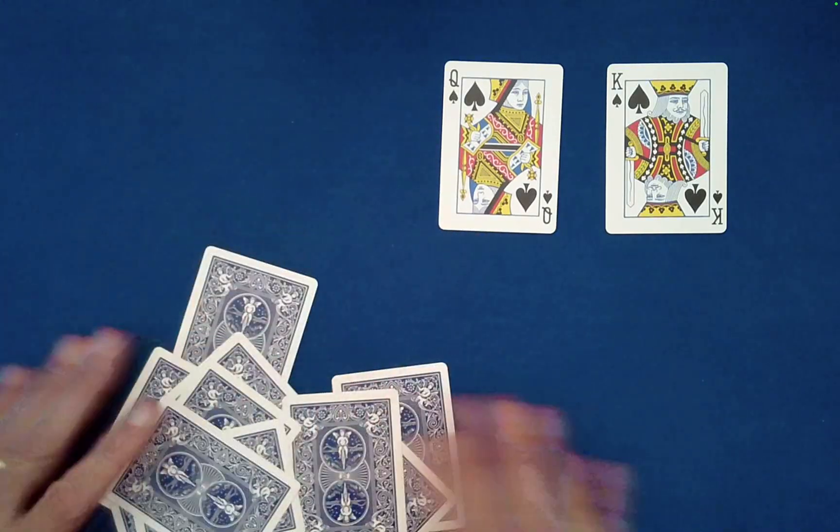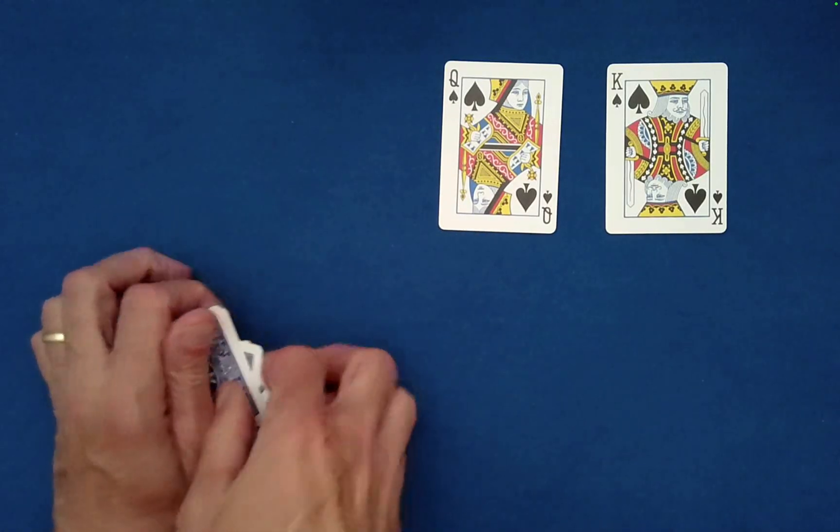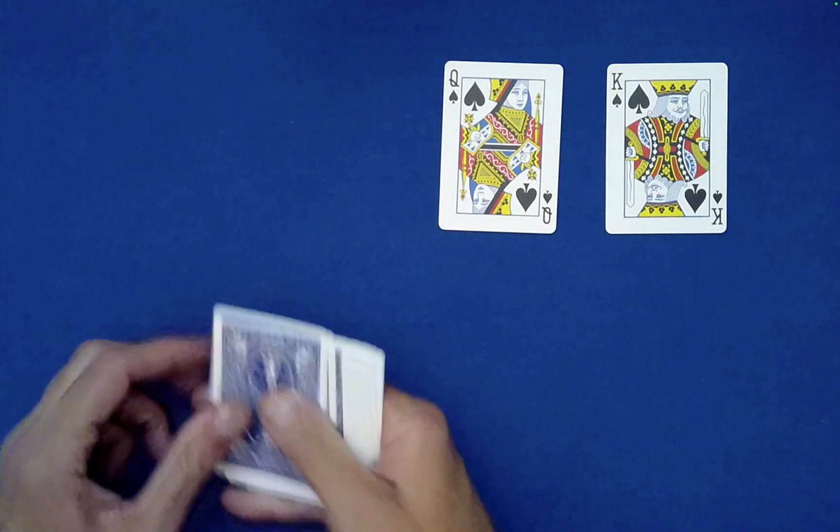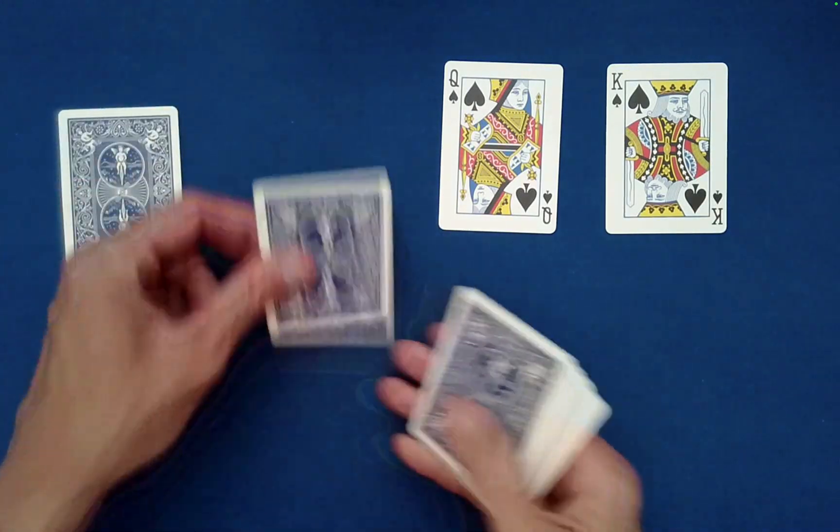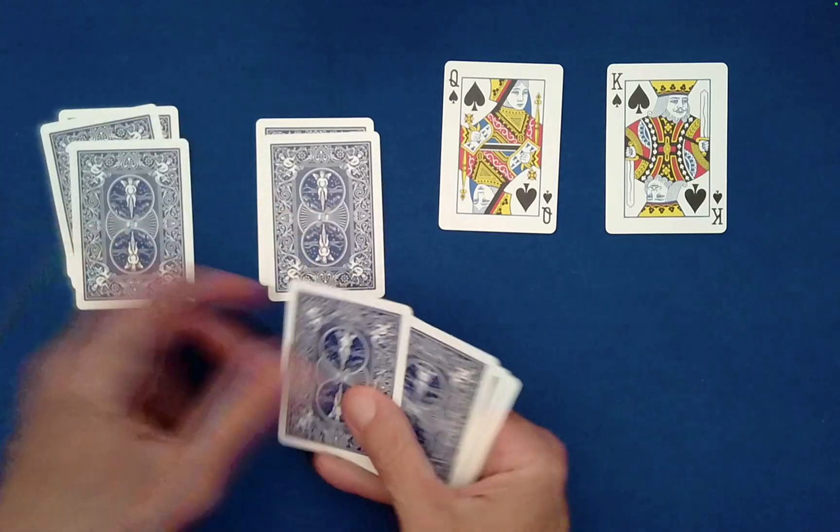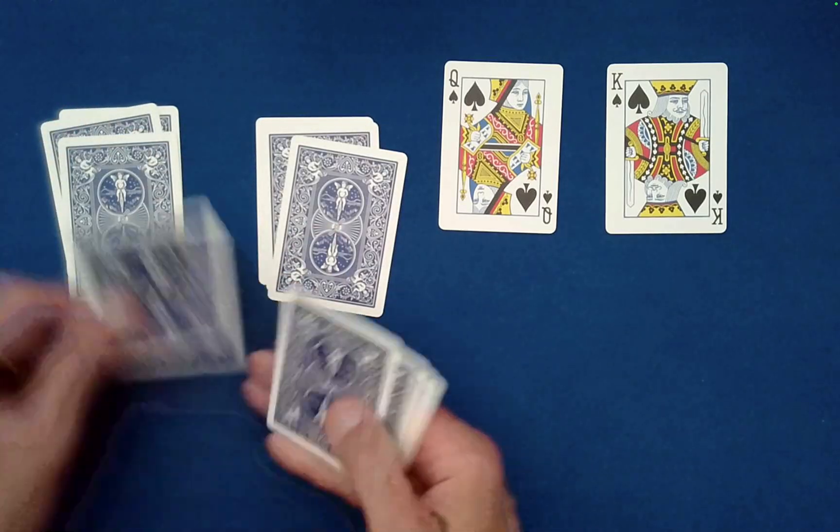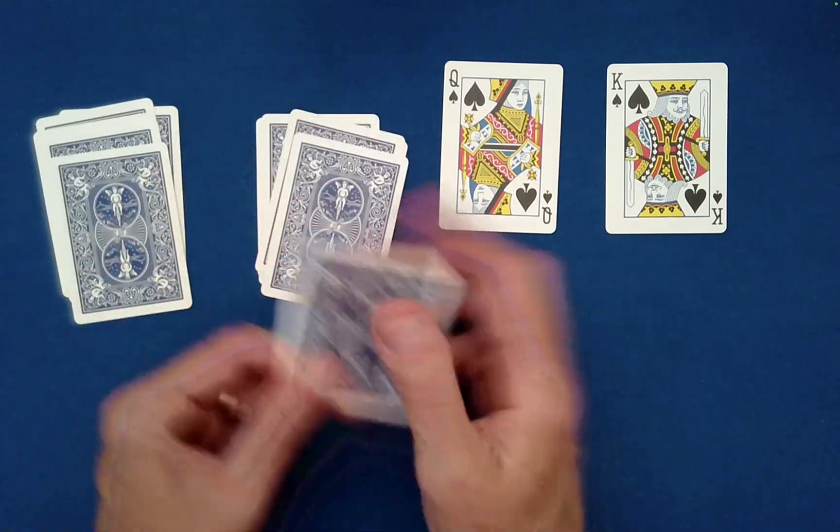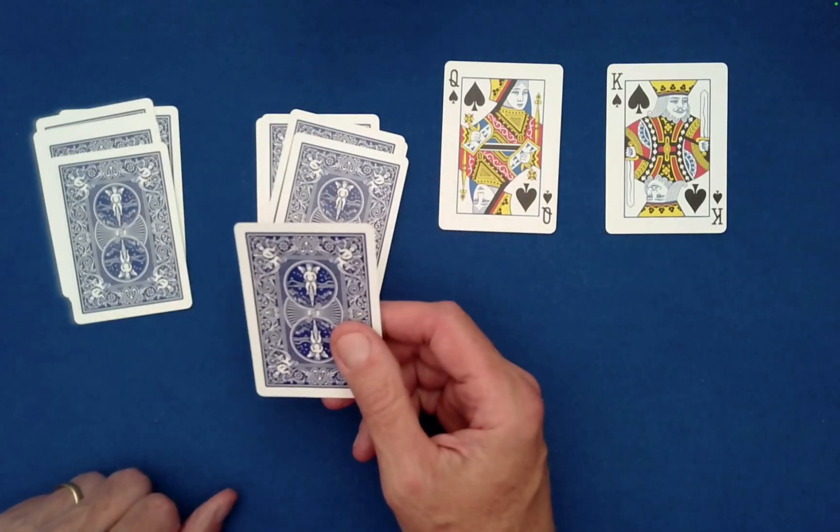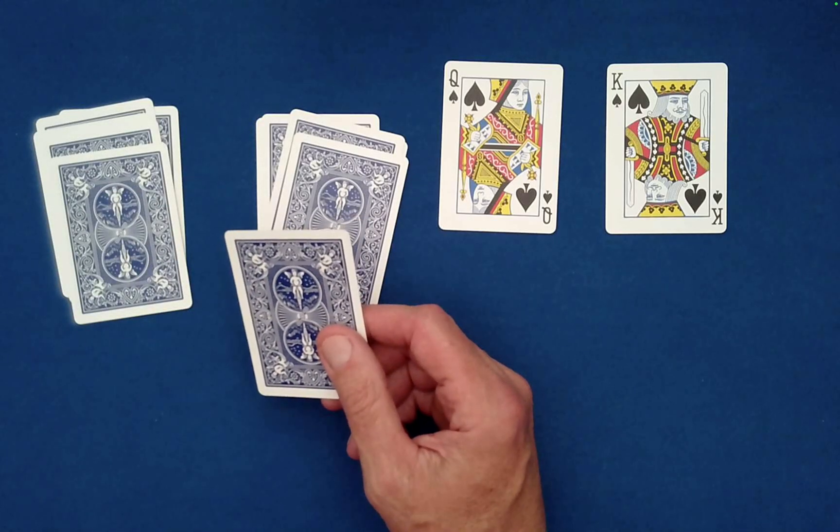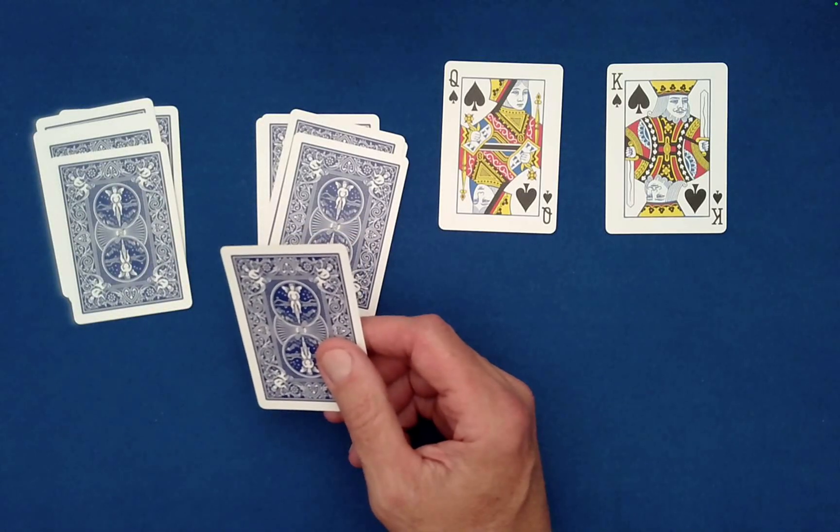Have them mix the cards as much as they would like. Now what we're going to have them do is deal out the cards into two piles, left pile and right. We're going to create even-sized piles, namely five in each. They'll be left with a single card at the end.